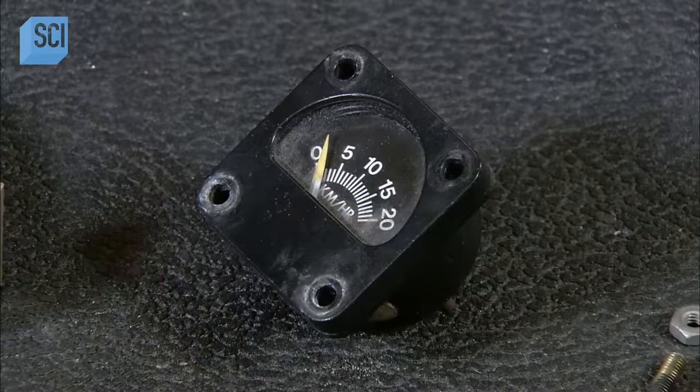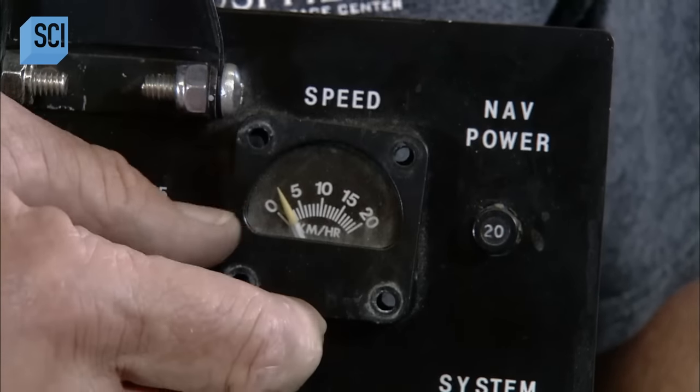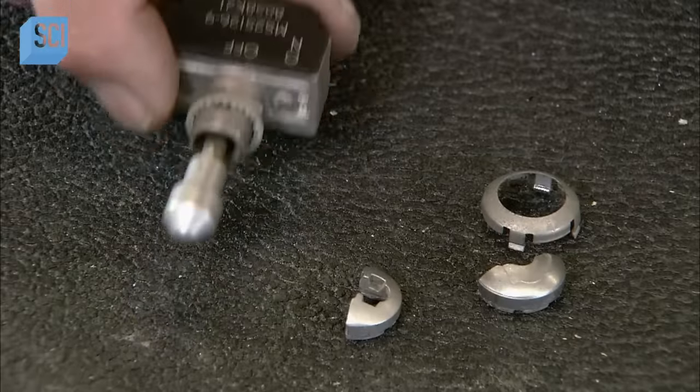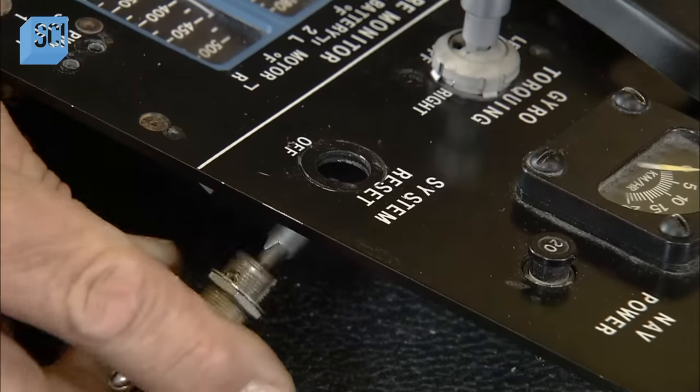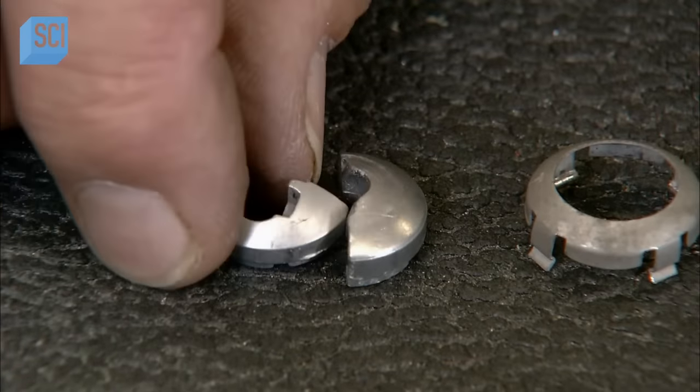Next, a technician assembles the instrument panel. He inserts various switches and gauges into their slots, including this system reset switch. It's used to bring the displays back to zero prior to an expedition.